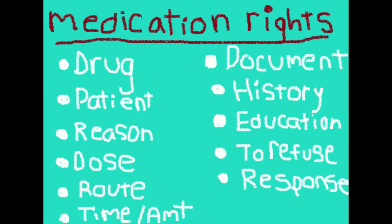Right drug — you want to make sure that when you pull the drug out of wherever your agency keeps them, that it's the drug that you need to give. I know it sounds really simple, but it could be easy in the midst of all the action to take the wrong thing. So if you want to give aspirin, make sure you took the aspirin and not the oral glucose by accident.